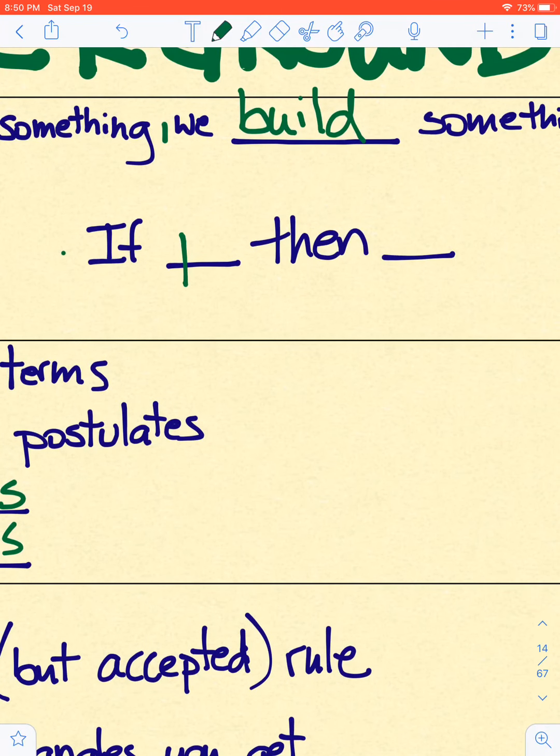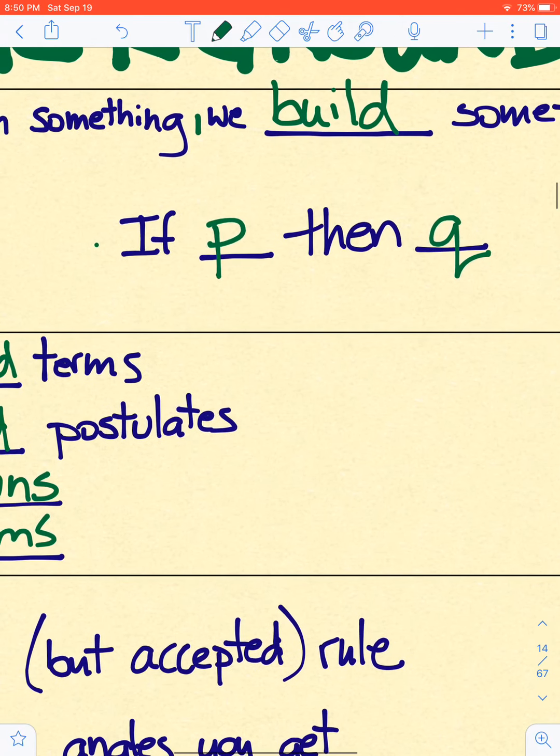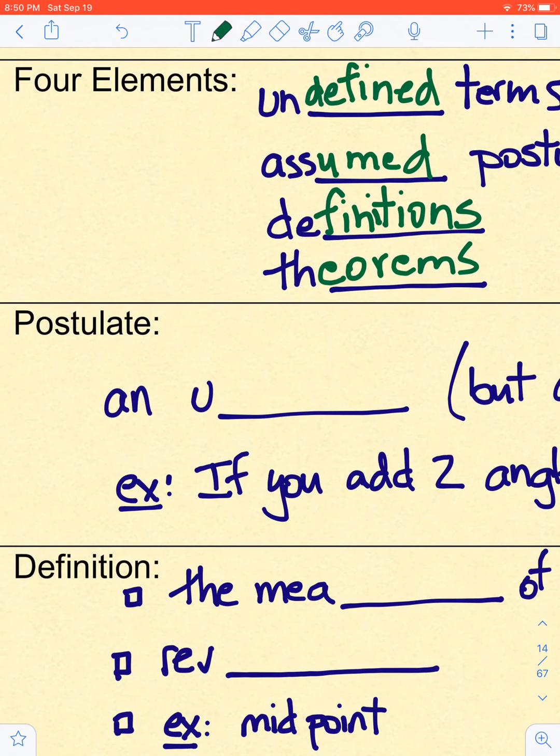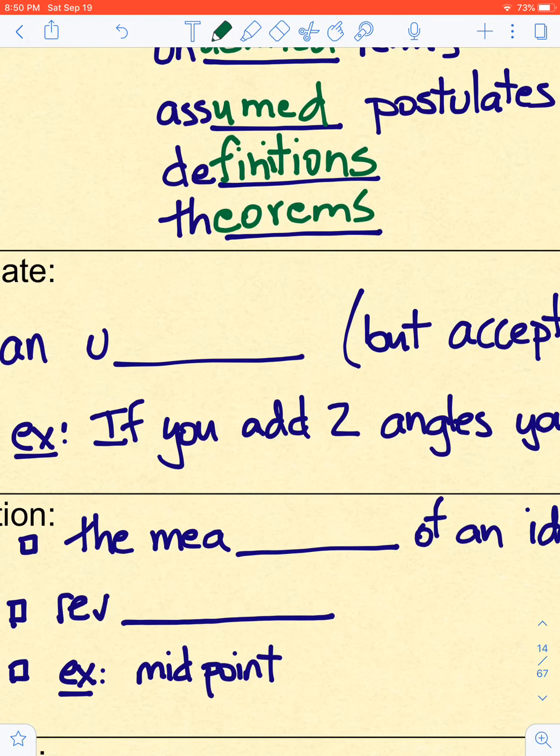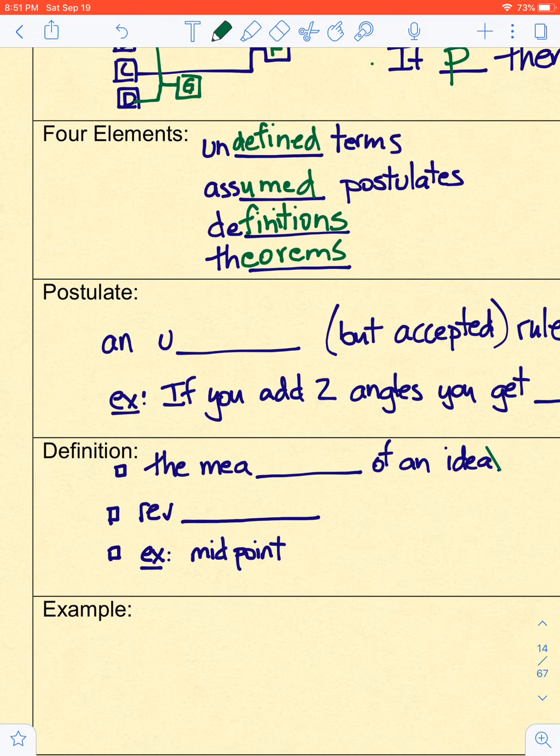All right. Postulates. A postulate is an assumed, but accepted. I would have said an assumed rule. Okay. Oh, I know. It's unproven. That's what it is. We don't prove it.